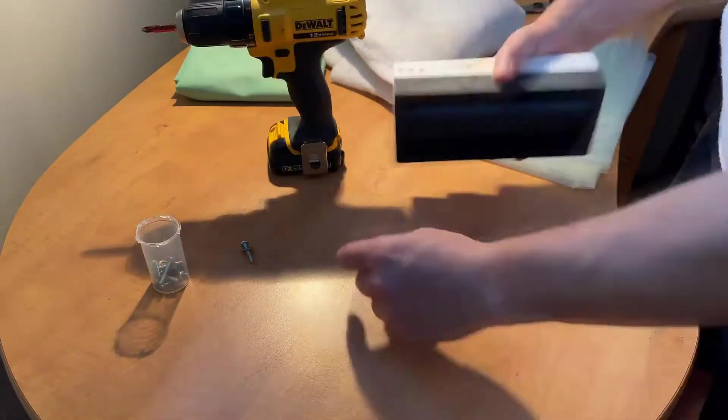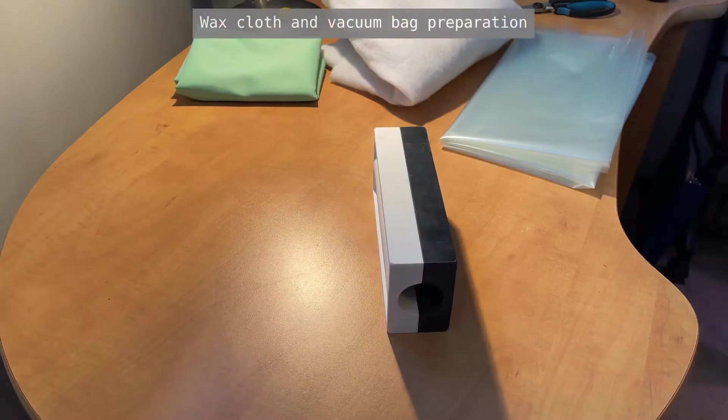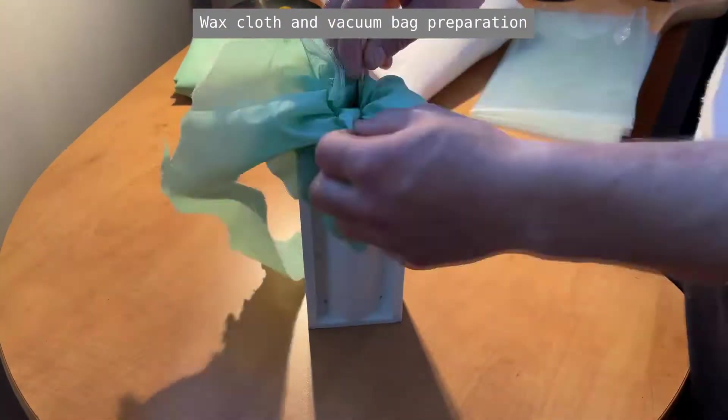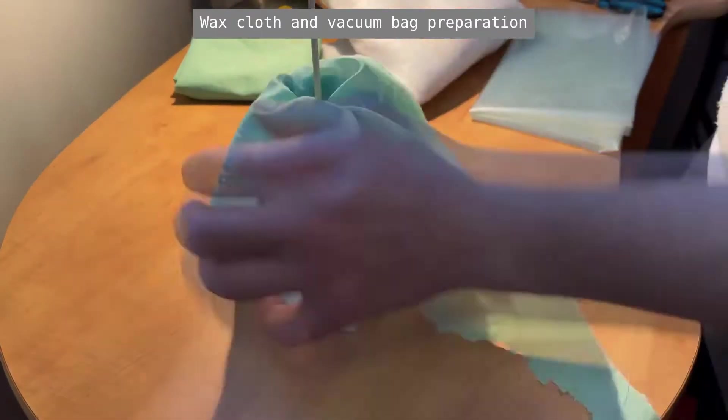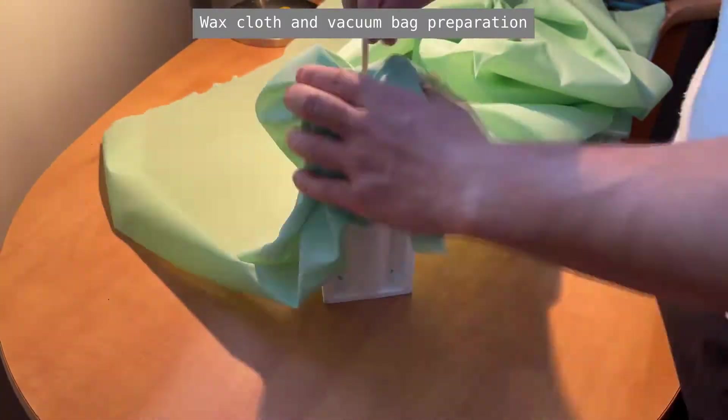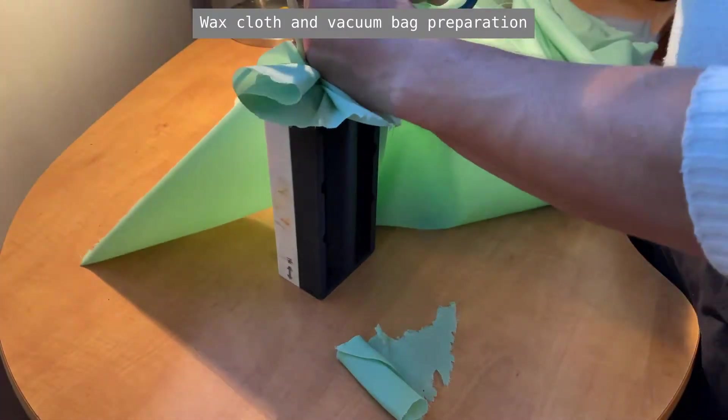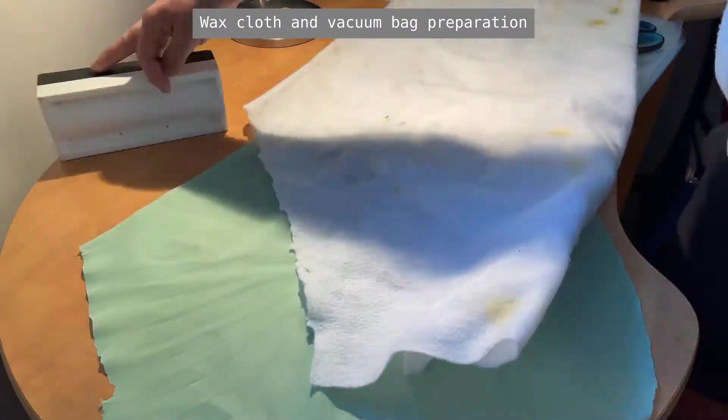Before laying up the prepreg, we must prepare the wax cloth and vacuum bagging. For this layup, I decided I wanted to try a different method from the last time which should provide better vacuum pressure on the inside of the cone. The green wax cloth can be cut into a circle of radius slightly bigger than the full length of the nose cone.